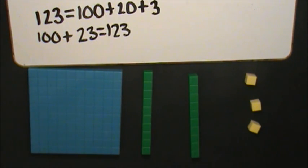Now, I will represent 123 in another way by decomposing the hundred into tens. 1 hundred is equal to 10 tens.